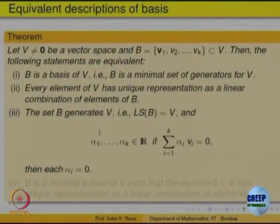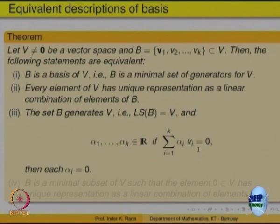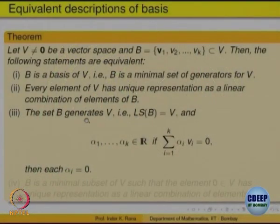That is essentially what we did in the previous part. So 2 implies 3: if every element has a unique representation, and if there is a representation such that sigma alpha_i * V_i equals 0, then the right-hand side 0 equals 0 times V_i summed. Uniqueness will say that each alpha_i must be equal to 0. So 2 implies 3 is obvious.